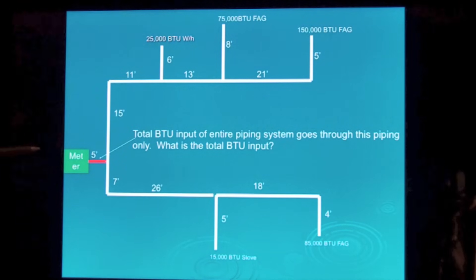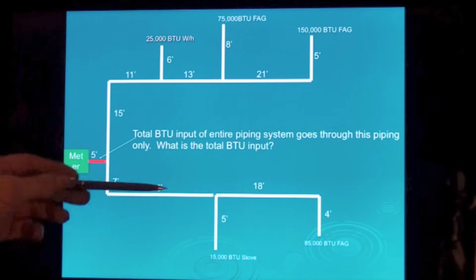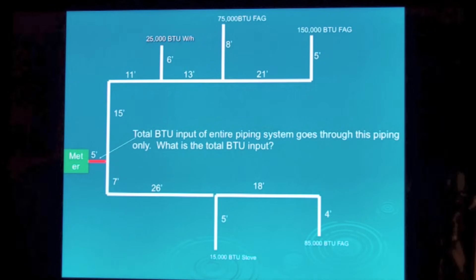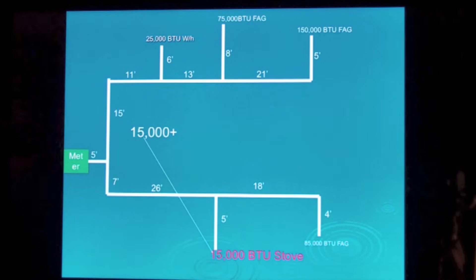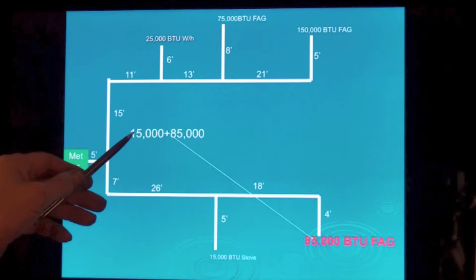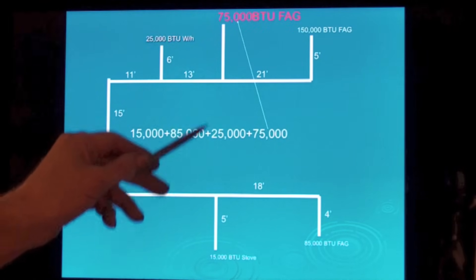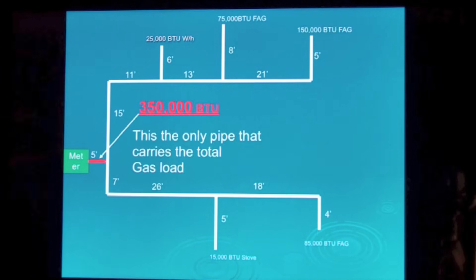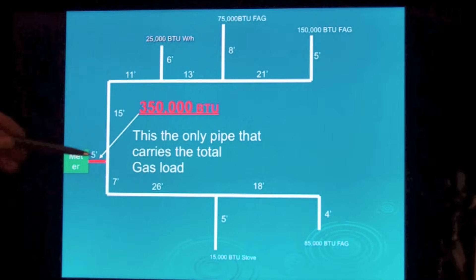The total BTU input of the entire piping system goes through that one five foot piece of pipe. The rest of the branches or drops have to move the total BTU, but this one five foot piece does. So we're going to add up the BTUs. We got 25,000, 75, and so on. Here we got 15,000, 85,000, 25,000, 75,000, and 150,000. That's a total of 350,000 BTUs going through that five foot pipe.